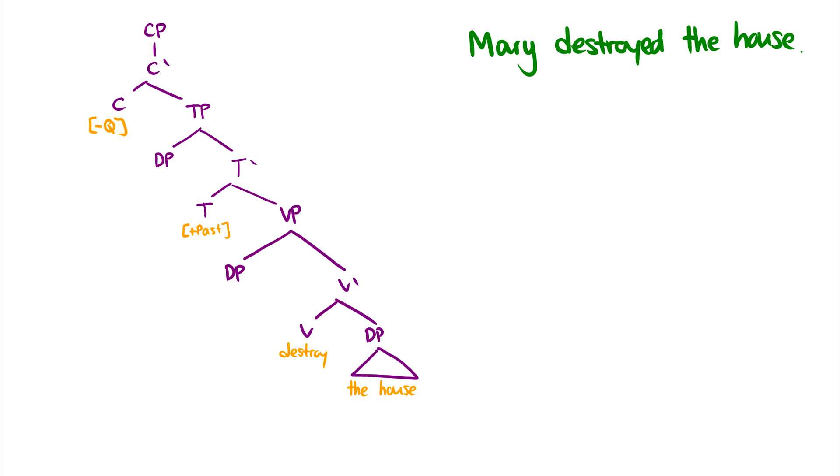But now what we're going to say is that actually the subjects of sentences, Mary, also originate as the specifier of VP. So now the subject and the object are generated much closer to VP.